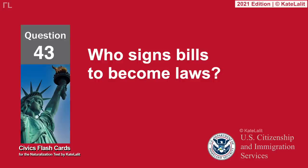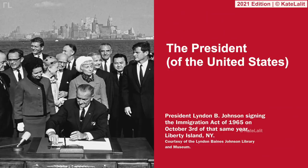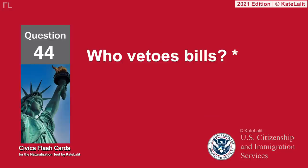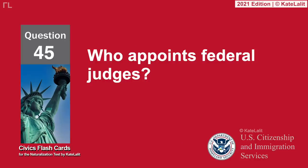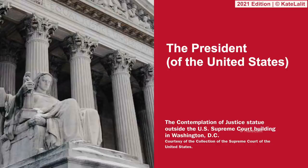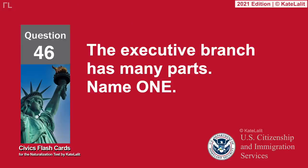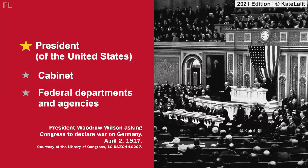Who signs bills to become laws? The President of the United States. Who vetoes bills? The President of the United States. Who appoints federal judges? The President of the United States. The Executive Branch has many parts — name one: President of the United States, Cabinet, Federal Departments and Agencies.